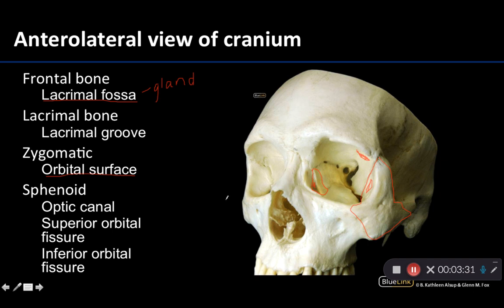Moving on to openings — you can clearly see in this view two small foramina right here; these are ethmoidal foramina, which we do not need to know for this particular lab. But these three you do need to know. You have your optic canal here, which is very clear to see — it's almost a perfect circle. As its name suggests, the optic nerve, cranial nerve 2, traverses through this region, and additionally the ophthalmic arteries enter the orbit through the optic canal.